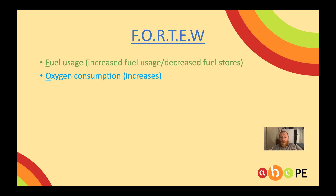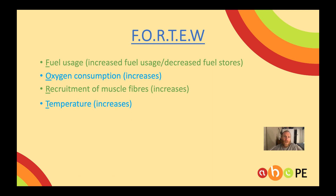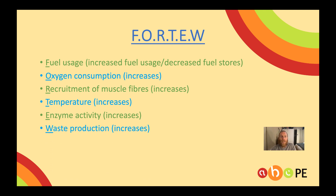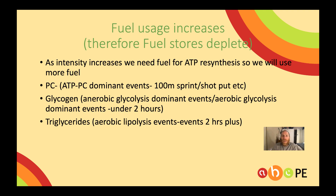F is for fuel usage — this will increase, and fuel stores will decrease. We have an increase in oxygen consumption, an increase in the recruitment of muscle fibers and motor units, an increase in temperature, increase in enzyme activity, and an increase in waste production. As we increase our intensity, we're going to need more ATP resynthesis, so we need the fuels. It's important to link the correct fuel usage with the correct event — and if we're using more PC, there's going to be more PC depletion.